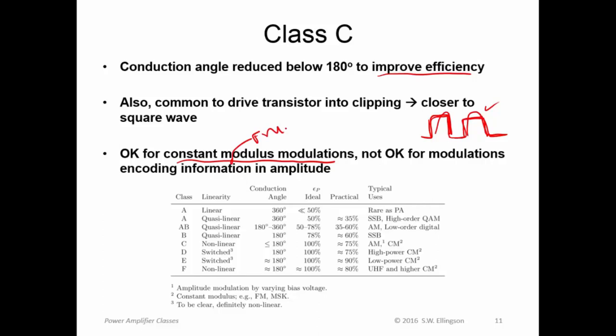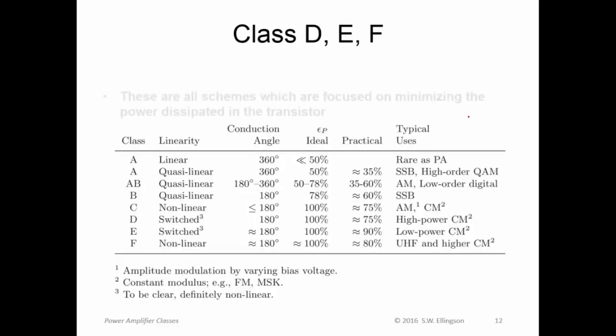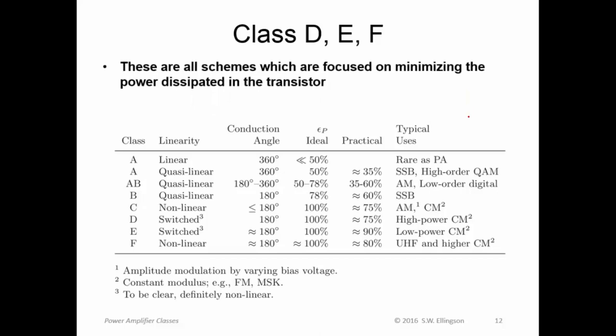So this is OK for constant modulus modulations. The classic example of this being FM. In FM, there's no information in the magnitude. So you don't really care what the waveform looks like. All the information is in phase. So as long as the phase and frequency relationship is OK here, this is really fine. And keep in mind, we also have the harmonic filter. And the harmonic filter does a pretty good job of cleaning this up. Classes D, E, and F. These are all schemes which are focused on minimizing the power dissipated in the transistor. So like Class C, they're utterly nonlinear. We're not really going to say any more about them, although you can read a few more details in the textbook. But these are the key ideas. These types of power amplifiers are of great interest because by improving efficiency, we're improving things like battery life in a mobile phone.